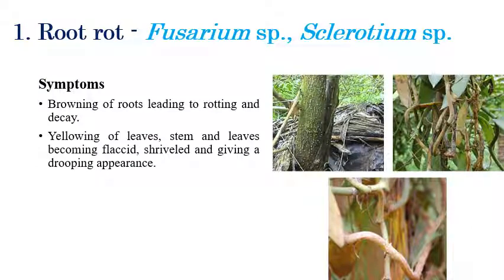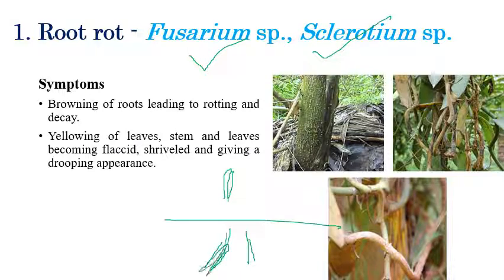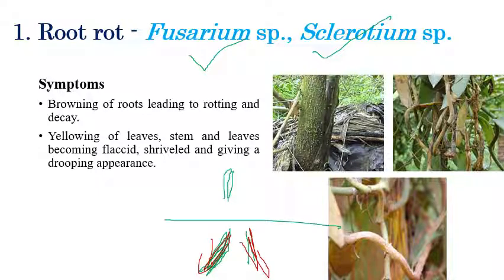Root rot is caused by Fusarium and Sclerotium species. Symptoms can be seen on roots as well as leaves. Initially, browning of roots and decaying of roots can be seen if infected by Sclerotium or Fusarium. On the above-ground level, especially on leaves, yellowing of leaves can be seen.